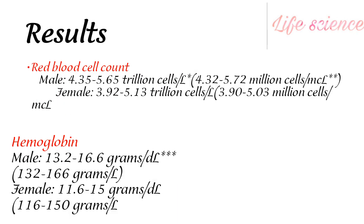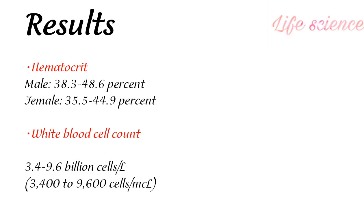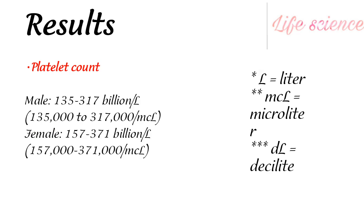The normal CBC reference ranges: Red blood cell count for males is 4.35 to 5.65 trillion cells per liter, and for females 3.92 to 5.17 trillion cells per liter. Hemoglobin for males is 13.5 to 17.5 g/dL and for females 11.6 to 15 g/dL. Hematocrit for males is 38.3 to 48.6% and for females 35.5 to 44.9%. White blood cell count is 3.6 to 11.0 thousand cells per microliter.